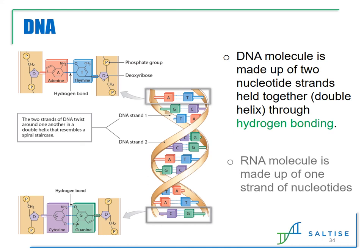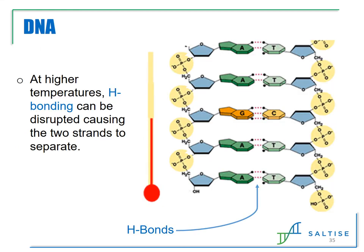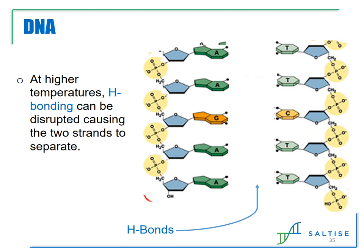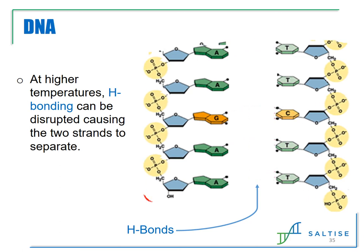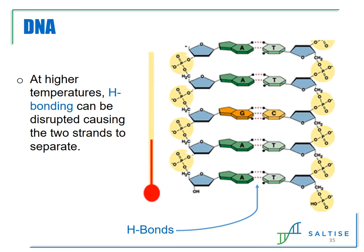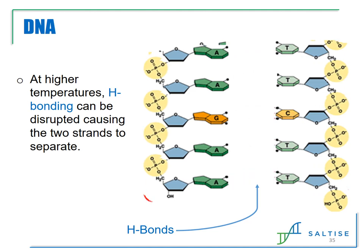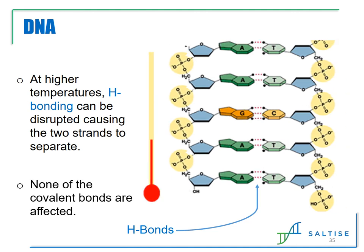RNA is made up of only one strand of nucleotides, so the shape of RNA depends on the order of the nucleotides and the subsequent interactions between them. Since the two strands of DNA are held together through hydrogen bonding, if DNA is exposed to higher temperatures, the hydrogen bonds would be disrupted and the strands of nucleic acids would separate. Notice, though, that the nucleic acids do not fall apart into individual atoms, because the covalent bonds are very strong and wouldn't break, unlike the hydrogen bonding interactions.